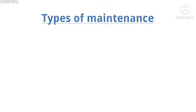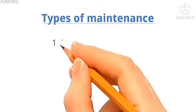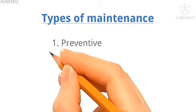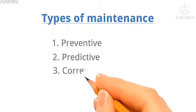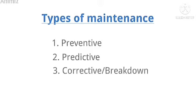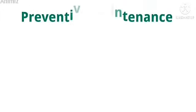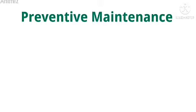The types of maintenance are grouped into three types. Number one, we have preventive maintenance. We have predictive maintenance, and we have corrective or breakdown maintenance. These three types of maintenance have different purposes, so we look at them one after the other. Preventive maintenance.